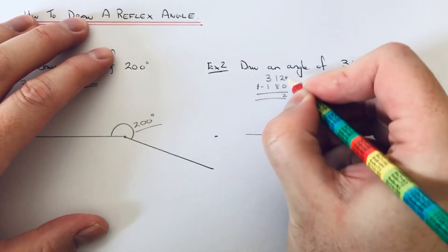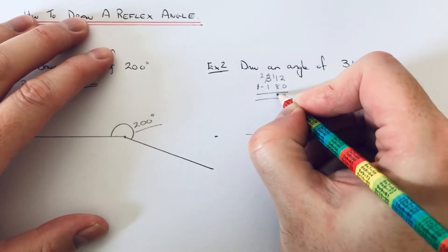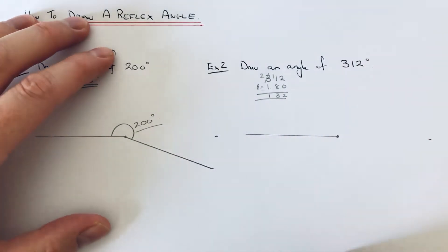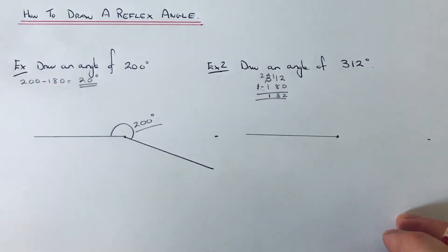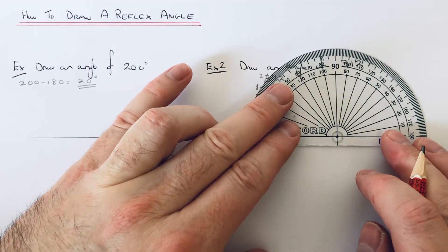2 take away nothing is 2. 1 take away 8, we can't do. 11 take away 8 is 3. 2 take away 1 is 1. So we've got to measure an extra 132 degrees.